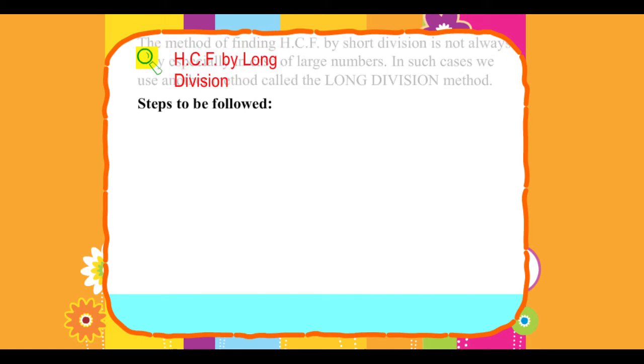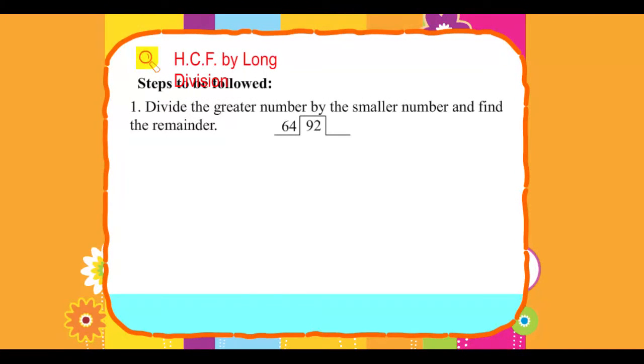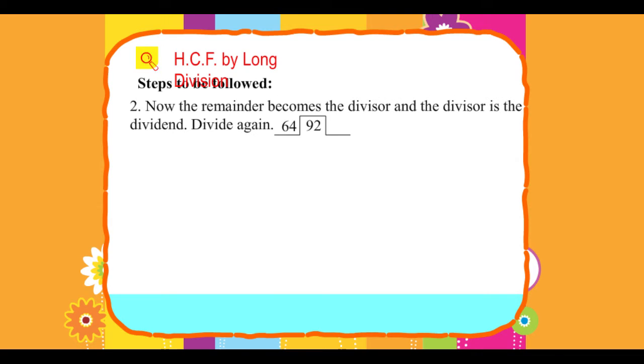Steps to be followed: 1. Divide the greater number by the smaller number and find the remainder. 2. Now the remainder becomes the divisor and the divisor is the dividend.